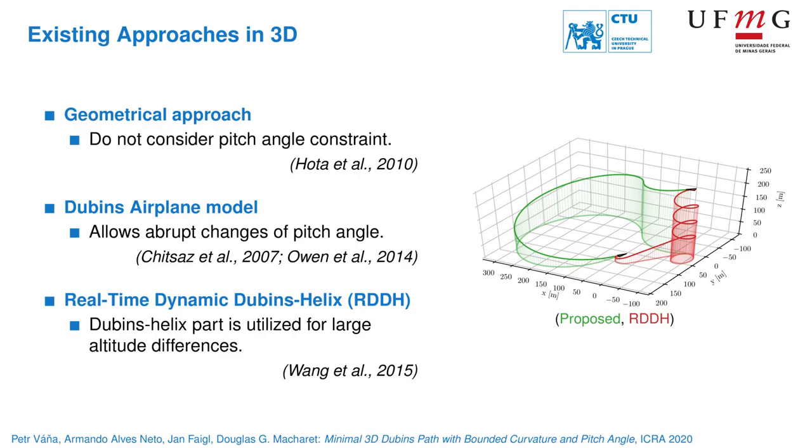The last approach called Real-Time Dynamic Dubins-Helix provides feasible 3D paths that meet all the constraints. It's based on helix segments that are inserted to gain the required altitude. We use this method as a baseline for the proposed approach.